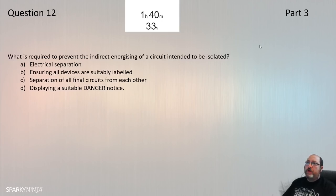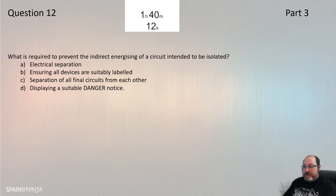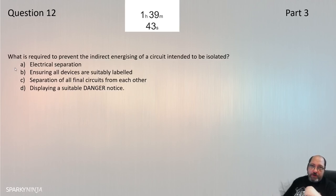Question 12: What is required for indirect energizing of a circuit intended to be isolated? Back to 314 — division of installation. Regulation 314.1 lists: every installation should be divided into circuits as necessary, with the sixth item being to prevent the indirect energizing of a circuit intended to be isolated. This is achieved by dividing it into circuits. Question 12 is C, from regulation 314.1.